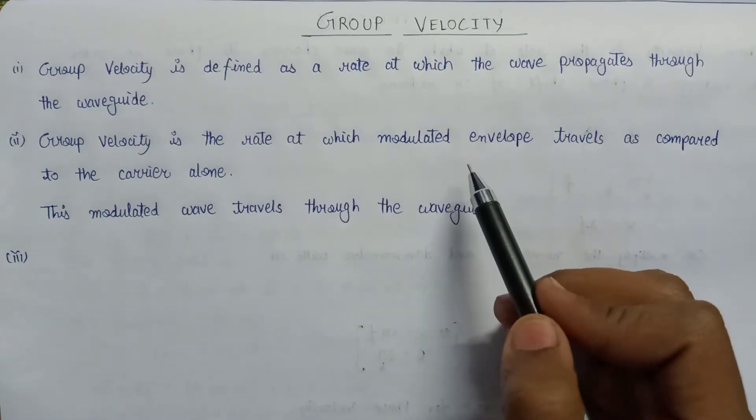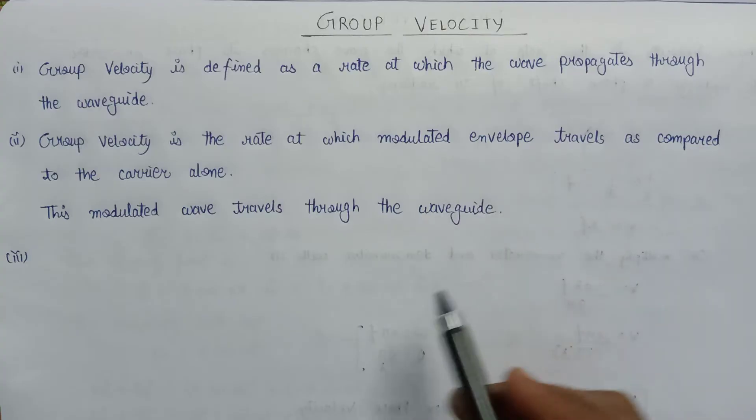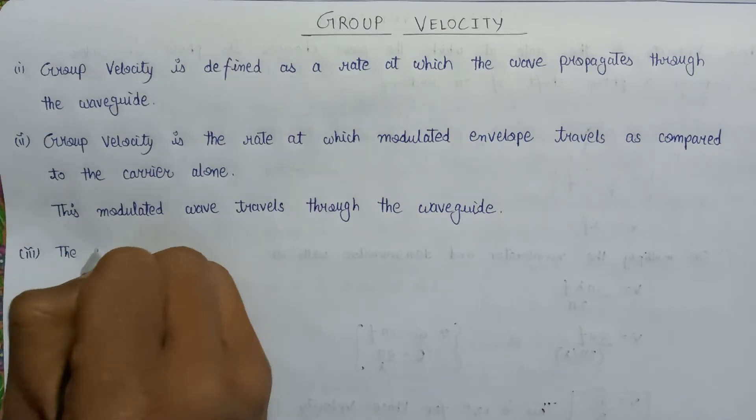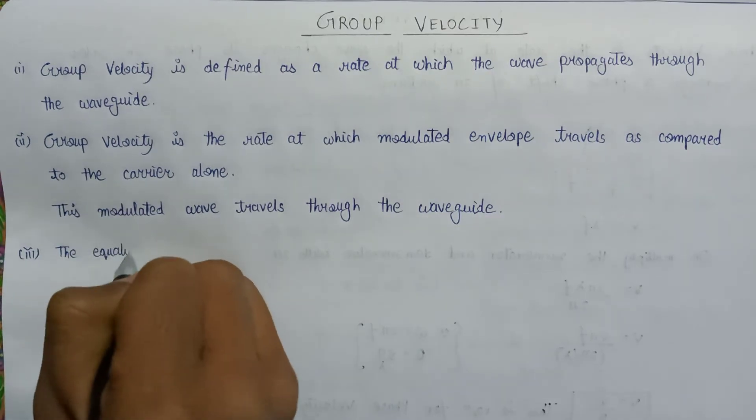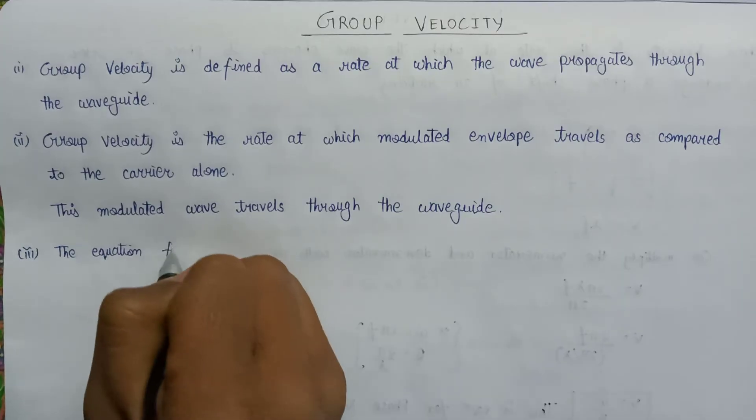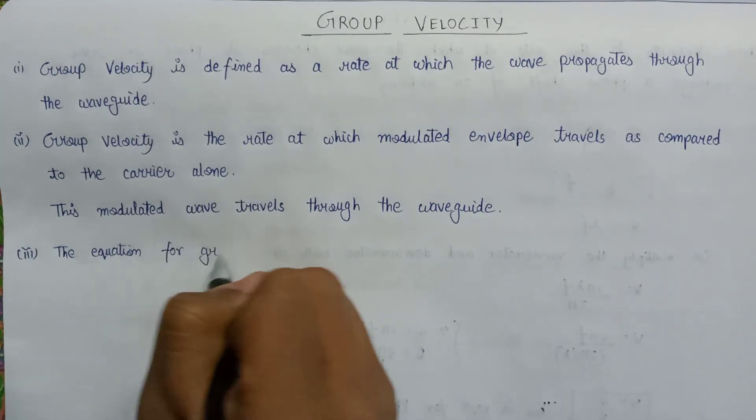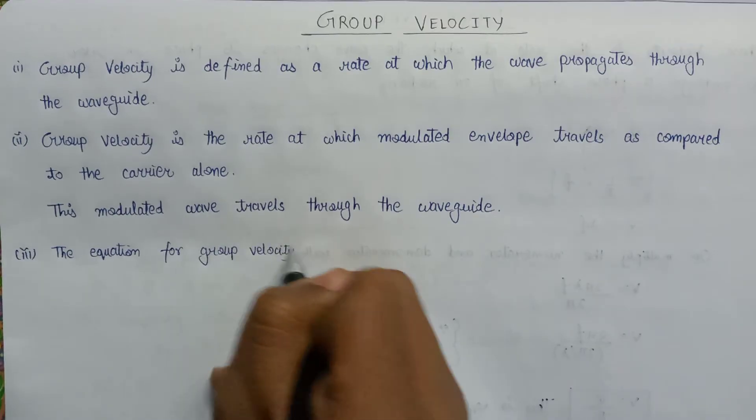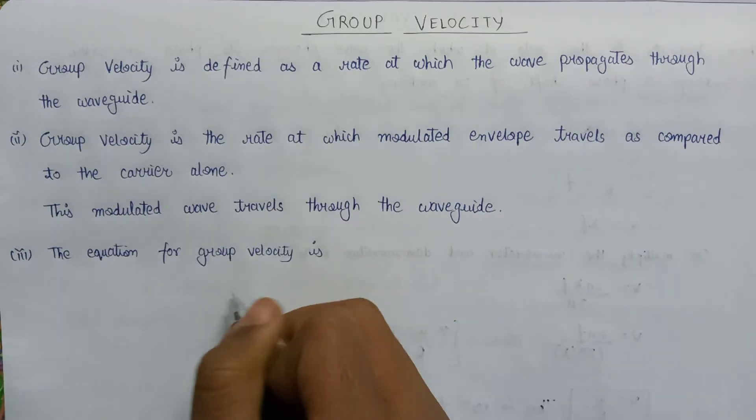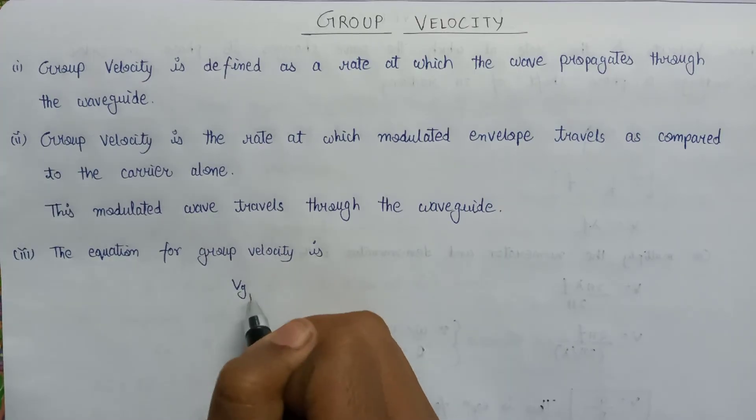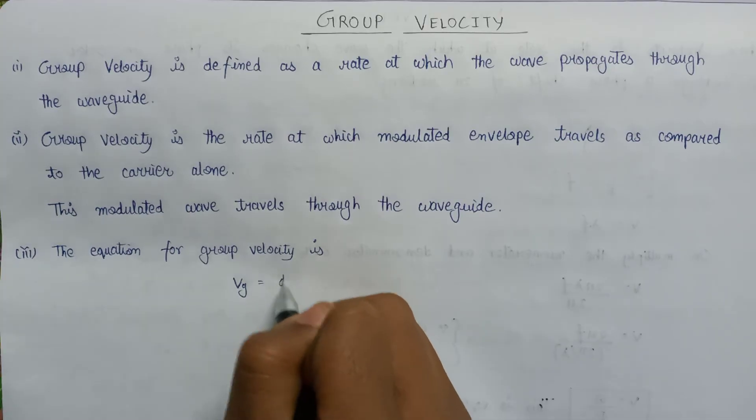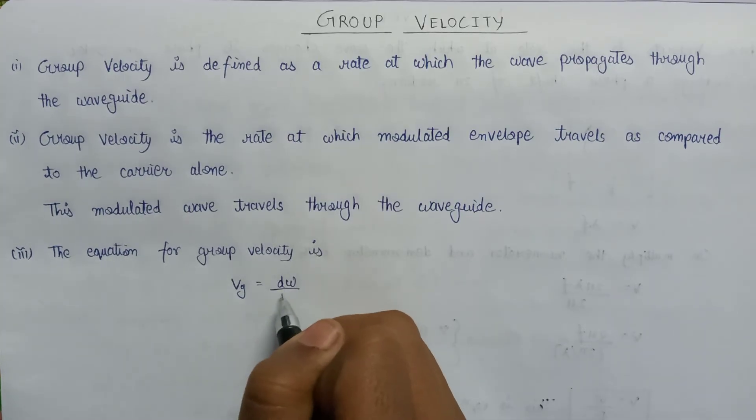So this is all about group velocity. Let us have a look at the equation. The equation for group velocity is given as v_g = dω/dβ, where v_g represents group velocity.